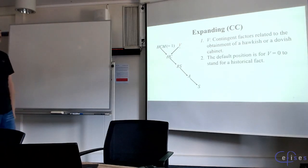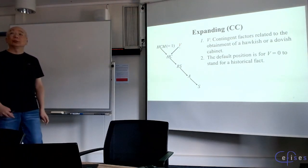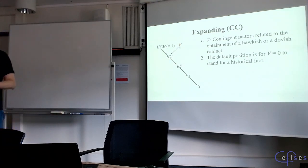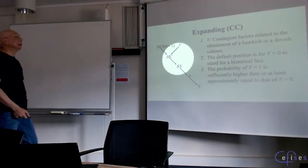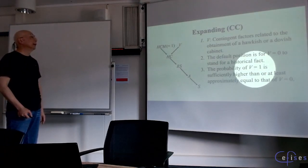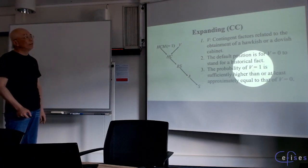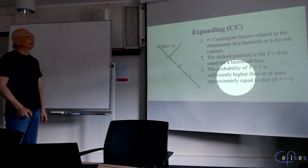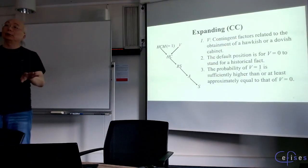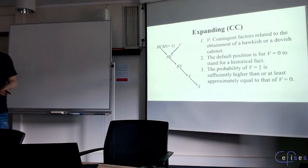The default position for the exogenous variable V is to be zero, because we actually had a dovish cabinet. Third, I asked the probability distribution of the values of V to satisfy the requirement — that at least the probability is approximately equal, or if V is one, it's even higher. That's the idea.